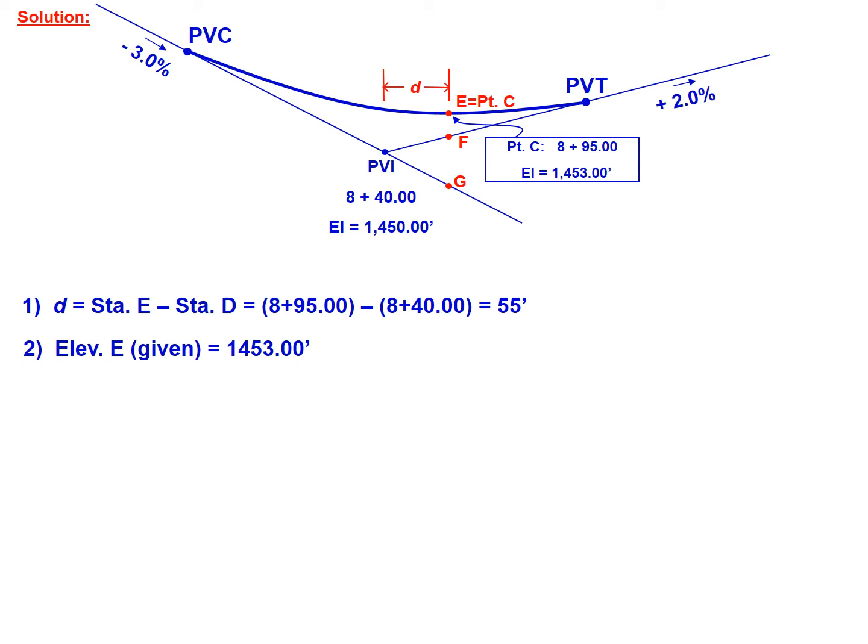The elevation of point E was given as 1453 feet. We need to determine the elevation of point F based on the elevation of the PVI. PVI has an elevation of 1450. We're going to move along that tangent in an upward direction at 2% over 55 feet, which gives us an elevation at F of 1451.1 feet.